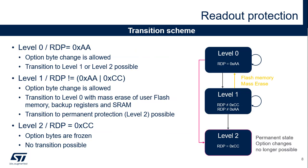This slide shows the possible transitions between each readout protection level. It's always possible to raise the protection level, but regression is only possible between level 1 and level 0 with the consequence of a full main flash arrays operation. The RDP option byte is protected by a complementary byte. The RDP level is coded in one option byte: level 0 is coded by a hex value 0xAA, level 2 is coded by 0xCC, and level 1 is coded by any value other than 0xAA or 0xCC.